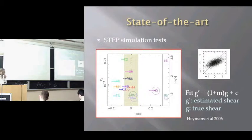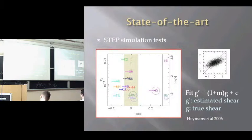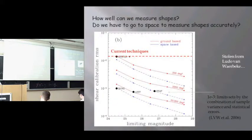Sarah showed this slide from the STEP simulations showing the sorts of accuracies possible with current methods. Essentially, one fits a straight line through the shears; the slope is 1 plus m, averaged along the bottom, and there's an offset c plotted here. Measurements are mostly getting figures less than 10% for m, which is fine for past surveys but not good enough for future ones.